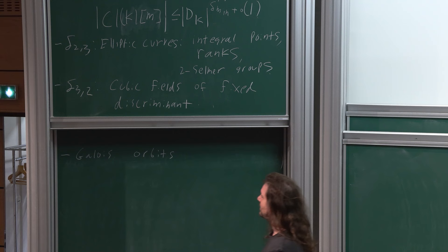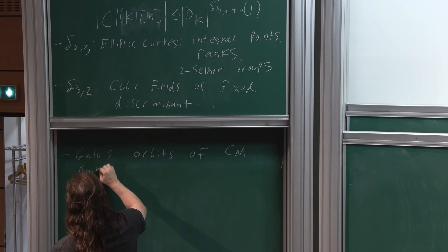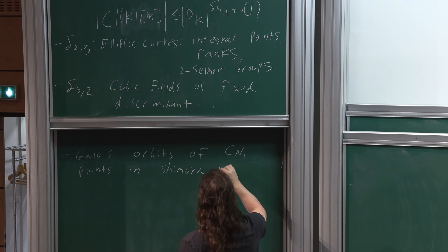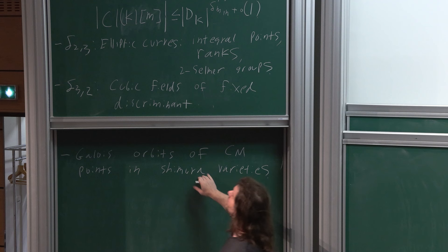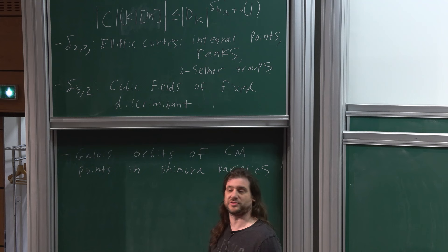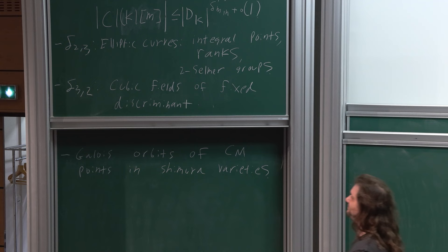If you look at Galois orbits of CM points—special points in Shimura varieties, like A_g, or equivalently zero-dimensional Shimura varieties—and you want to know their field of definition, it turns out they too are built up of quantities like this, specifically actual class numbers and quantities like this. So to get the correct size for these Galois orbits, for the degrees, the fields of definitions, you end up wanting to learn things like this.